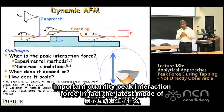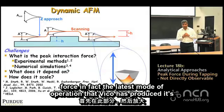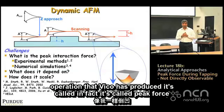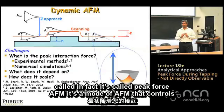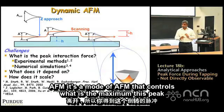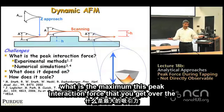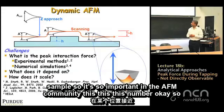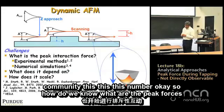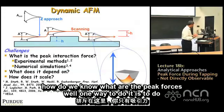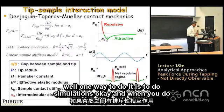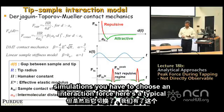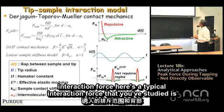There's the latest mode of operation that Bruker has produced called peak force AFM — a mode that controls the maximum peak interaction force over the sample. It's so important in the AFM community. One way to determine peak forces is to do simulations, and when you do simulations you have to choose an interaction force model.